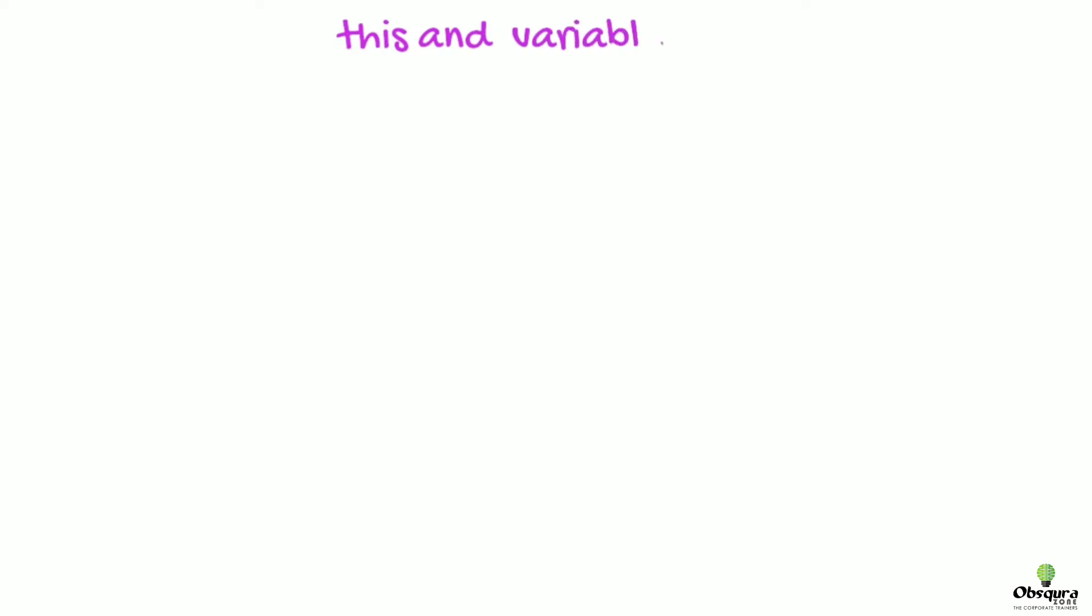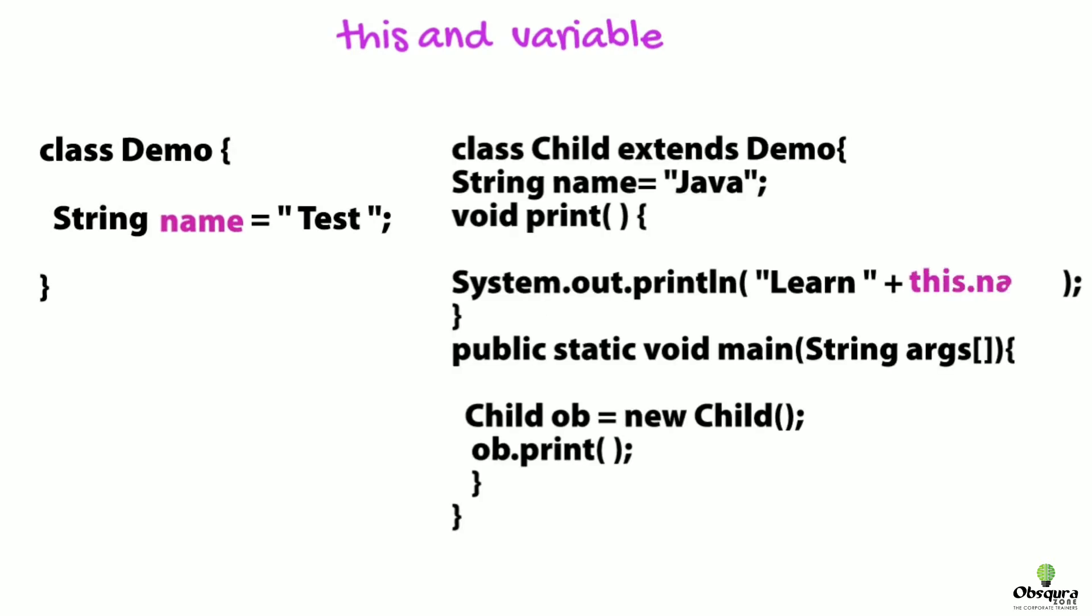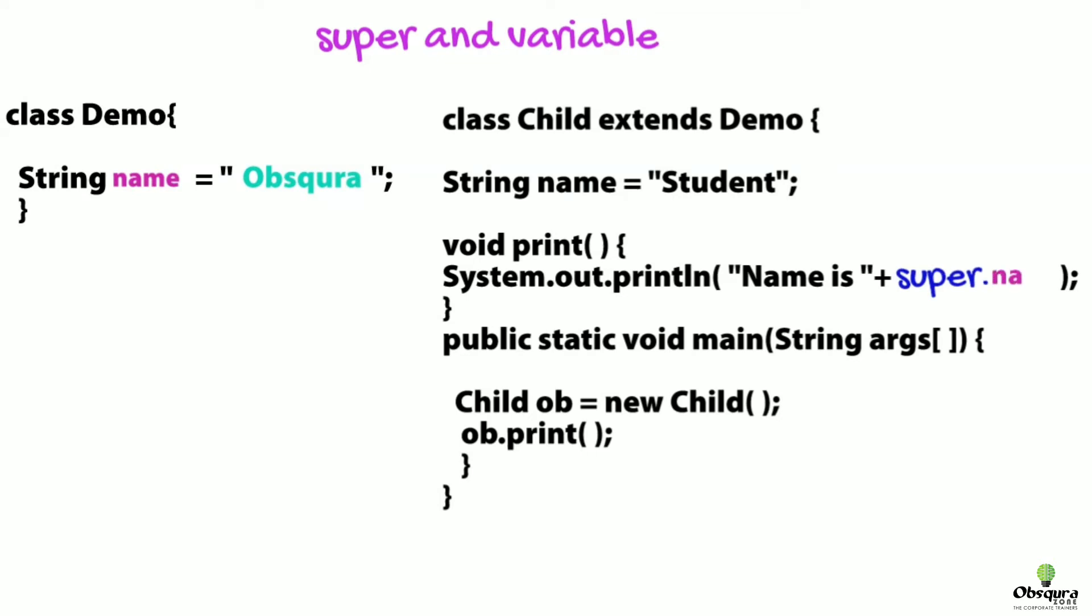In this case, output will be ABC. This refers to the current class. If you want the parent class, then in this example, if you see, use the super keyword. It will refer to its parent class instance variable.